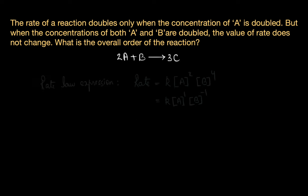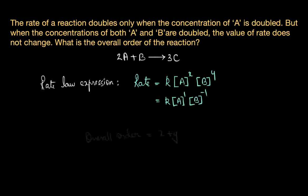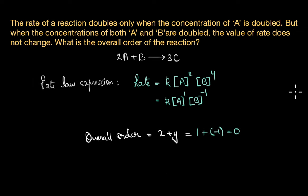Finally, the rate law expression for the reaction can be written as rate is equal to K into A power X times B power Y, where X is equal to 1 and Y is equal to minus 1. As a result, the overall order of the reaction is X plus Y — X is plus 1, Y is minus 1 — and that gives us the overall order of this reaction as 0.